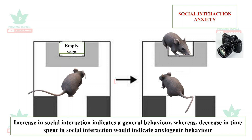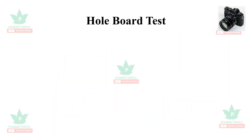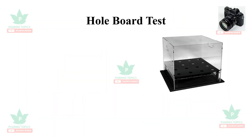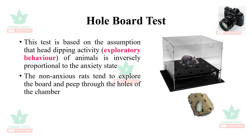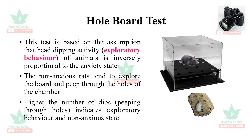The hole board test uses an apparatus where the animal is placed and allowed to explore holes. This test is based on the assumption that head-dipping activity — the exploratory activity of animals — is inversely proportional to the anxiety state. Non-anxious rats tend to explore the board and peep through the holes; a higher number of dips indicates exploratory behavior and a non-anxious state.